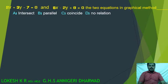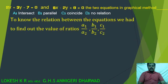A intersect, B parallel, C coincide, and D no relation. To know the relation between the equations, we had to find out the values of ratios A1 by A2, B1 by B2, and C1 by C2.